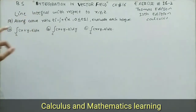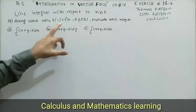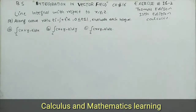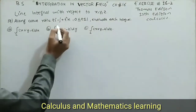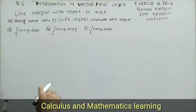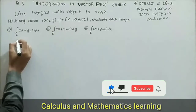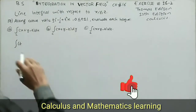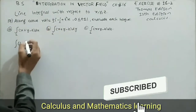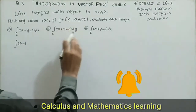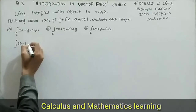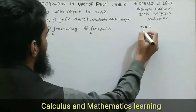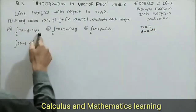Now solving question number 17: along curve r(t) = ti minus j plus t²k, where 0 ≤ t ≤ 1, evaluate each integral. The coefficient of i is t, so x equals t. The coefficient of j is negative 1, so y equals negative 1. The coefficient of k is t², so z equals t², making minus z equal to negative t². Since x equals t, dx equals dt.